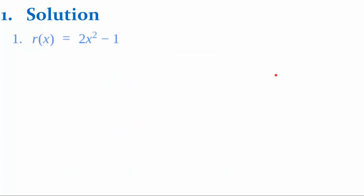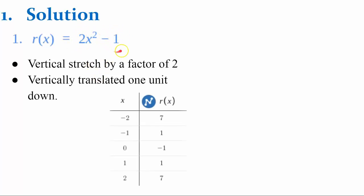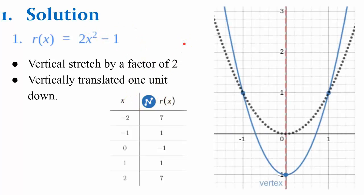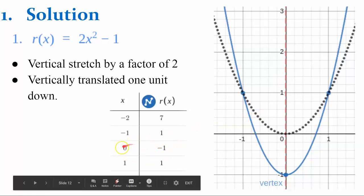Here's our solution for problem one. Function r is 2x squared minus 1. Compared to the parent function, this is a vertical stretch by a factor of 2 and a vertical translation down 1 unit. I create a table of values, plug in inputs to solve for outputs, and graph. The black dotted line is the parent function, and the blue function has been stretched — it goes closer to the y-axis. Every output has increased by a factor of 2, and the vertex has shifted down 1 unit. The vertex and y-intercept of function r are (0, negative 1). The axis of symmetry is the same.